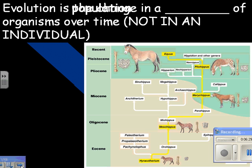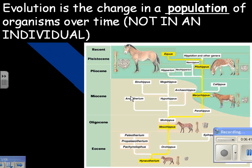Evolution is a change in a population of organisms over time. One thing I hate on sci-fi shows: they'll talk about an individual evolving — 'he's the most evolved.' It's actually a population that evolves; it's the whole population that changes over time. He might have a great adaptation, but it would have to change the whole population. Though some species, like certain flowers, can double their chromosome number in one generation and become a new species. But for the rest of us, it happens over a period of time.